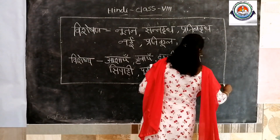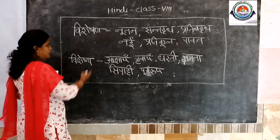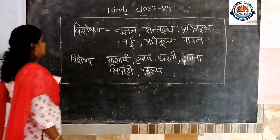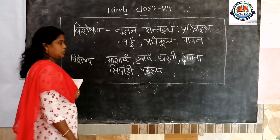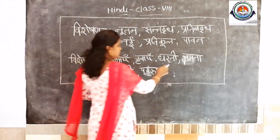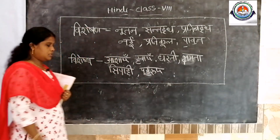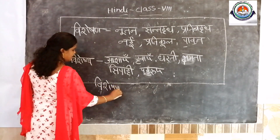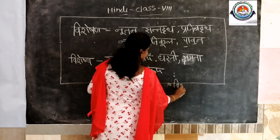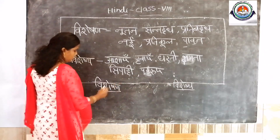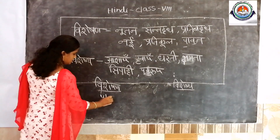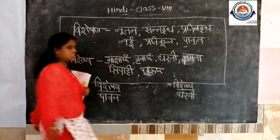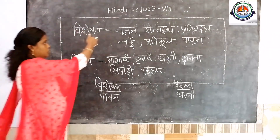From these words, find which is the vishishan and which is the vishishya. For example: dharti — in our textbook, which type of dharti? Pavan dharti. So pavan is the vishishan — the describing word of dharti. Dharti is the noun word, so dharti is the vishishya. Like that, do all the words.